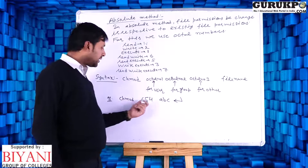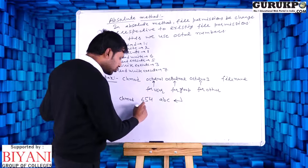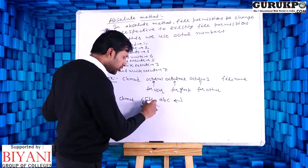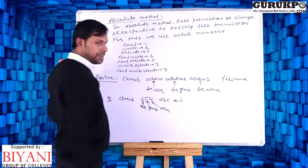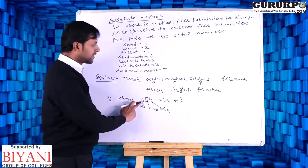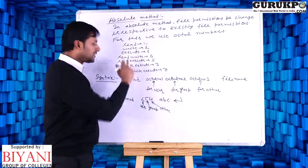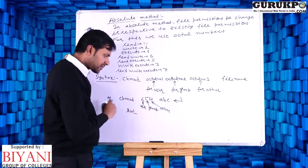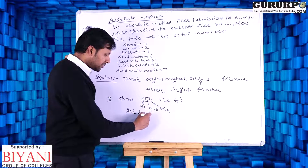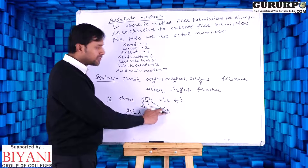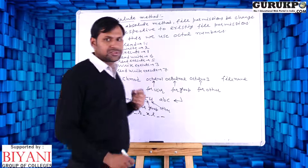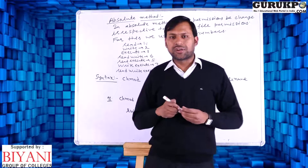For example: chmod 654 ABC. That means ABC file has the following permissions — user has 6 (read and write), group has 5 (read and execute), other has 4 (only read permission). In this way we can change file permissions using the absolute method.